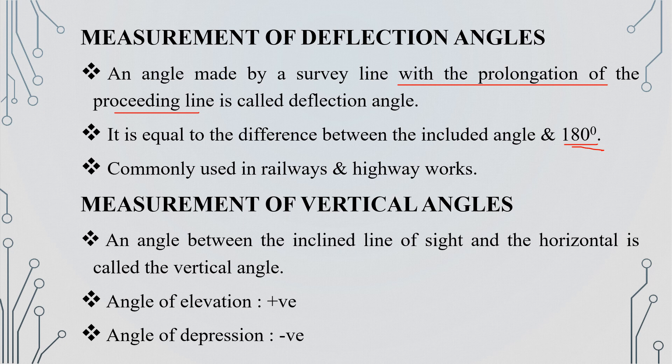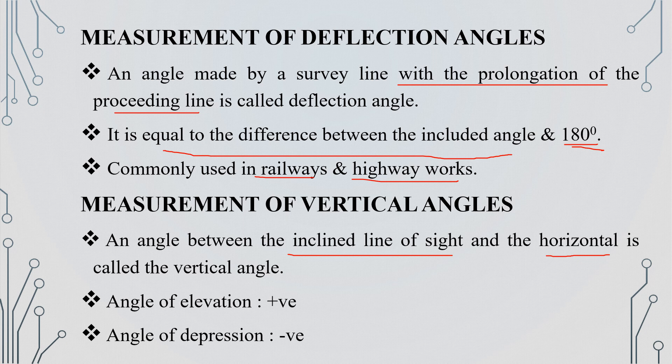There are also included angles. The Vertical Angle is the angle between the inclined line of sight and the horizontal plane. The vertical angle includes the angle of elevation and the angle of depression.